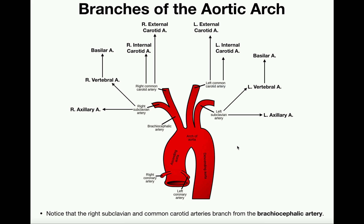Let's talk about the aortic arch. The left ventricle pumps blood out to the peripheral tissues — all the tissues of the body — and it does so by pumping blood into the aorta. There are three parts of the aorta: the ascending aorta, which carries blood upwards; the aortic arch; and the descending aorta, which carries blood down toward the inferior thoracic organs, the abdominal organs, and the lower limbs. Blood moves unidirectionally from the ascending aorta through the aortic arch and down the descending aorta.